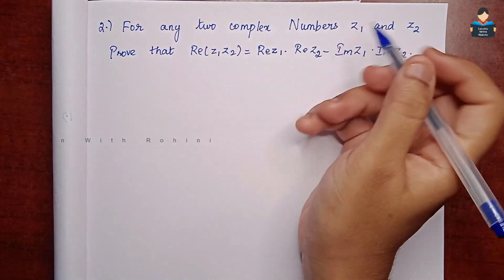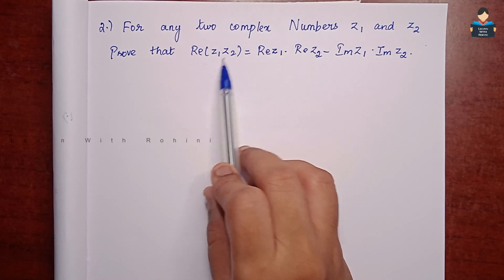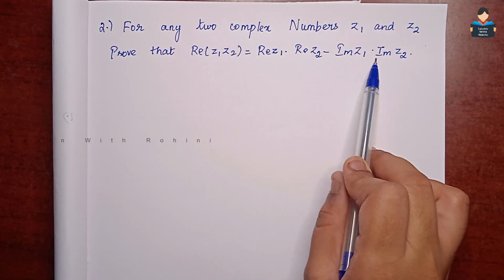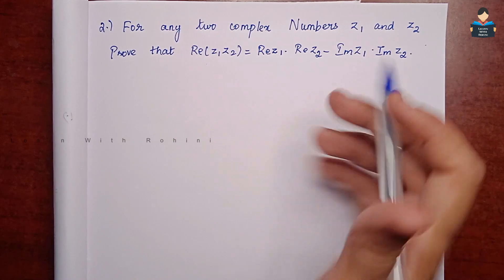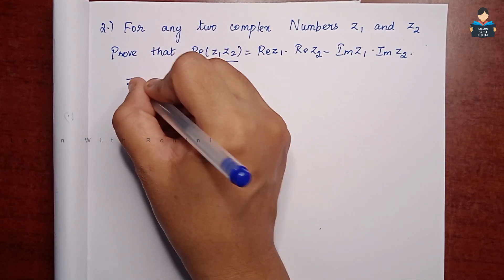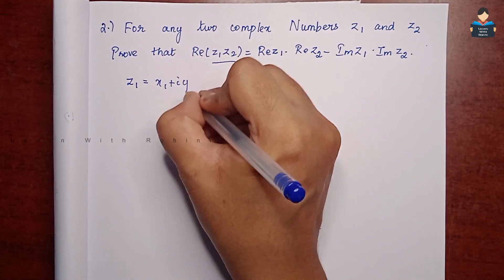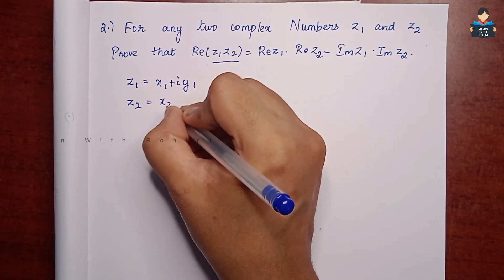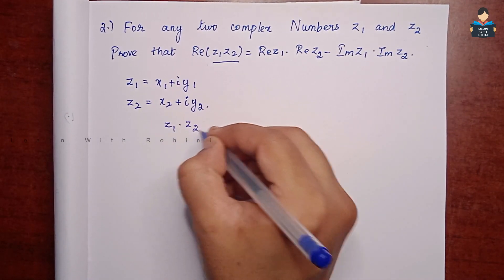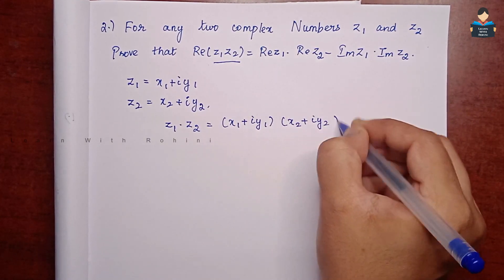Now the second question: for any two complex numbers Z1 and Z2, prove that the real part of Z1 times Z2 is equal to the real part of Z1 into the real part of Z2 minus the imaginary part of Z1 into the imaginary part of Z2. First, let Z1 equal x1 plus iy1 and Z2 equal x2 plus iy2.